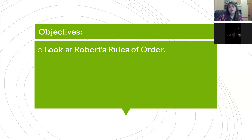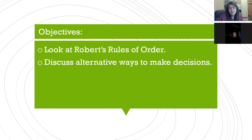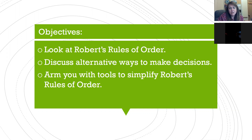The goal of what we want to talk about this evening is to take a look at Robert's Rules of Order and better understand what they are. You can use the chat box or unmute yourself to ask questions. I also want to discuss alternative ways that clubs can make decisions, making it easier for younger members to engage in a beneficial way.